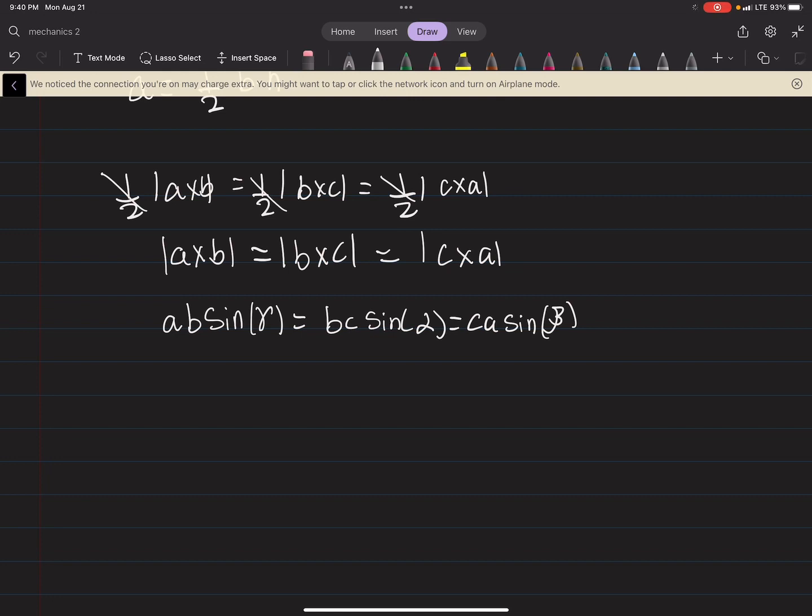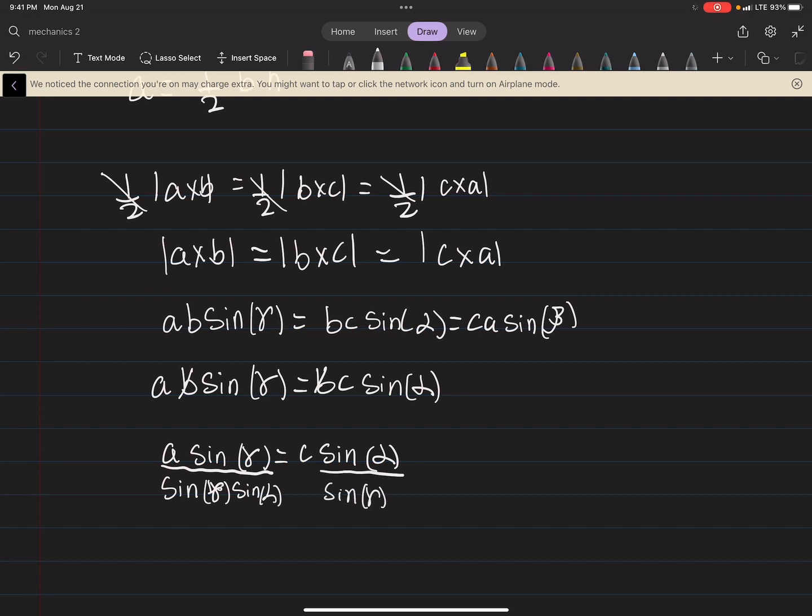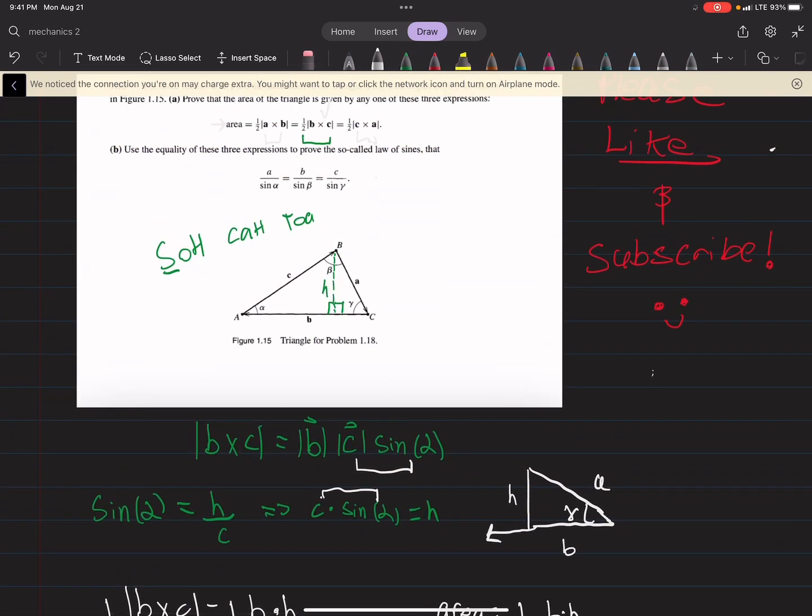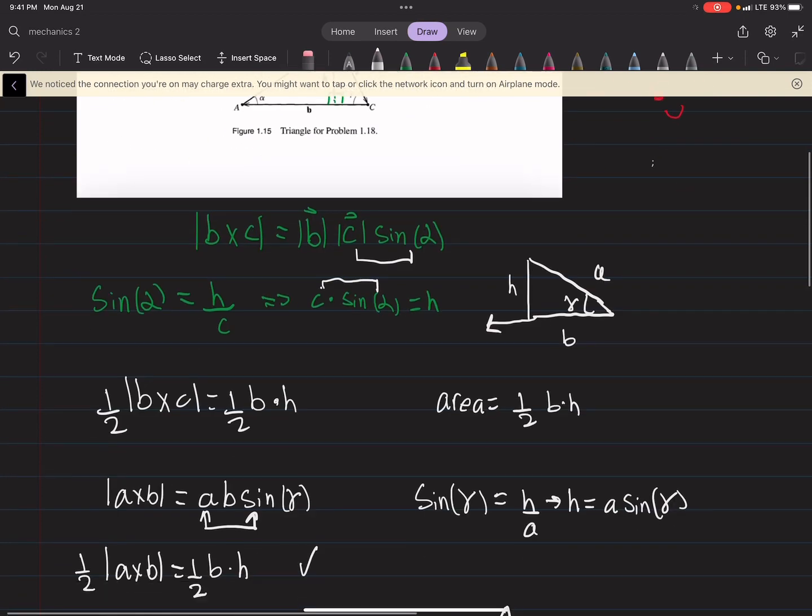So let's start with this. We can say A times B times sine of gamma equals B, C sine alpha. Just the first two equations there. Obviously, the B drops, and we have A sine gamma equals C sine alpha. And now if we divide both sides by sine gamma, sine alpha, you'll be left with A, the sine gamma's cross out. So you have A over sine alpha equals C over sine gamma. Which is the first two there. So that's good. That's what we wanted.